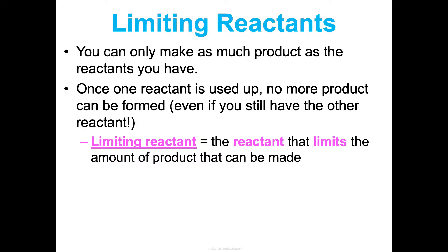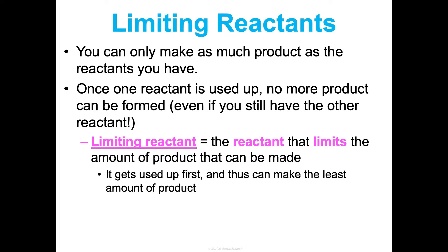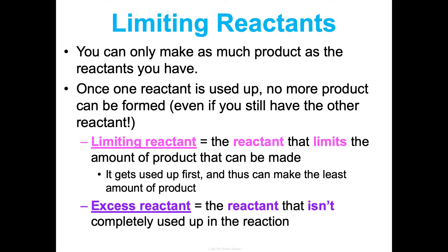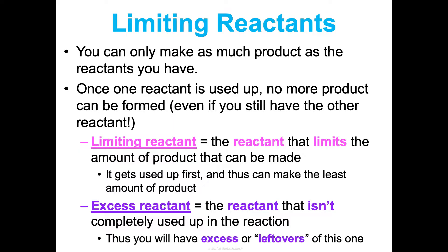The limiting reactant is the reactant that limits the amount of product that can be made. It gets used up first and thus can make the least amount of product possible. The excess reactant is the reactant that isn't completely used up in the reaction — you have leftovers of this one. When I'm done making PB&Js, I'll have excess peanut butter and jelly left over. We're just going to take this same idea and apply it to carbon dioxide, water, and chemicals.